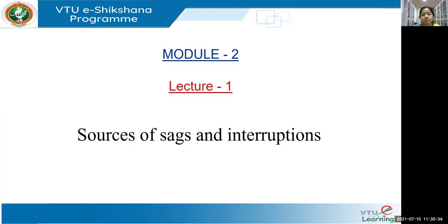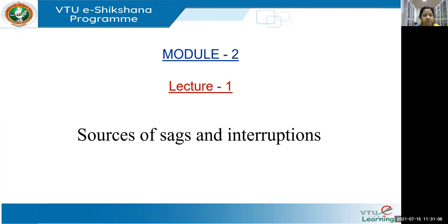We are going to read about sources of sags and interruption. At the utility sector, people are really worried as they are getting a lot of complaints at the utility end about poor power quality due to these sags and interruptions. The major reason behind these sags and interruptions is the sensitive devices used at the consumer end.